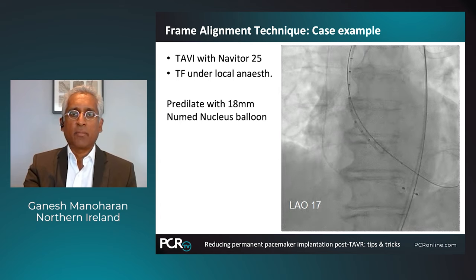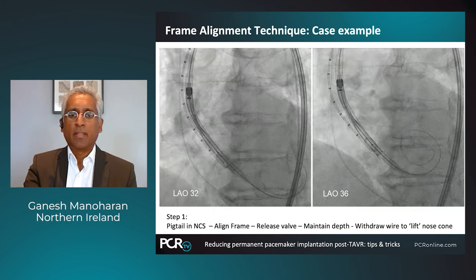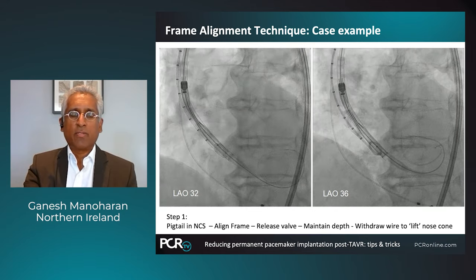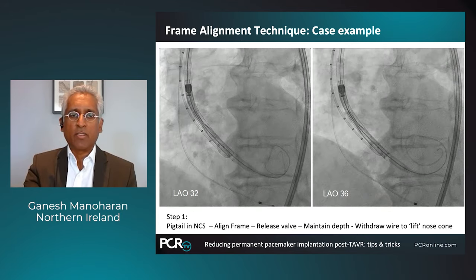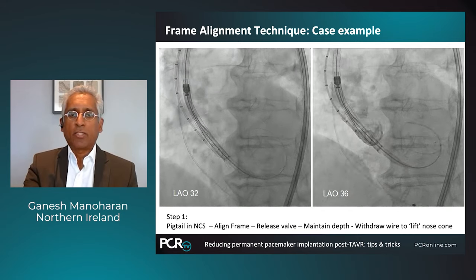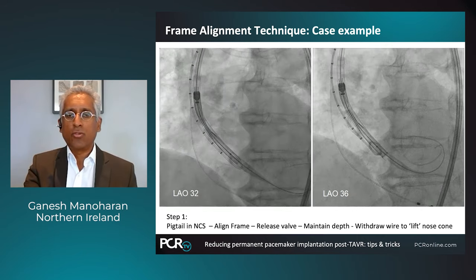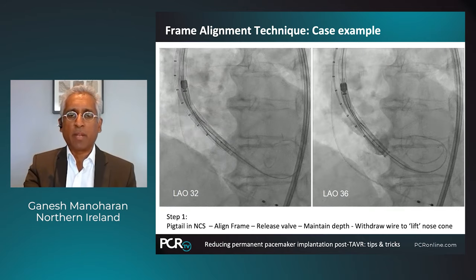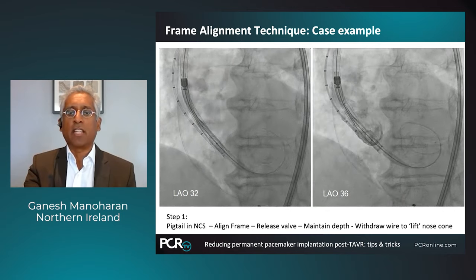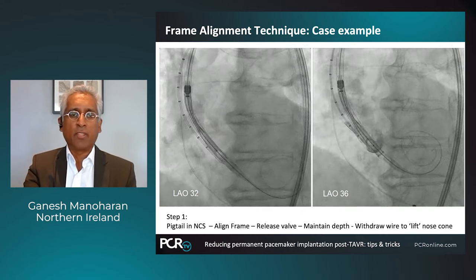Starting the case: pre-dilatation is performed. I'm using a Navator 25 valve with an 80 mm valvuloplasty balloon. You then advance the valve — in this case, up to an RAO 32 angulation. Position the valve just above the sinus, start releasing the valve, and align the inflow portion of the frame to be coplanar. You check your position — about two to three millimeters depth — and move from RAO 32 to RAO 36. There's no caudal or cranial tilt when using the frame alignment technique. Importantly, gently lift the nose cone by withdrawing the stiff wire, reducing nose cone interaction with the LVOT and minimizing trauma to the left bundle.